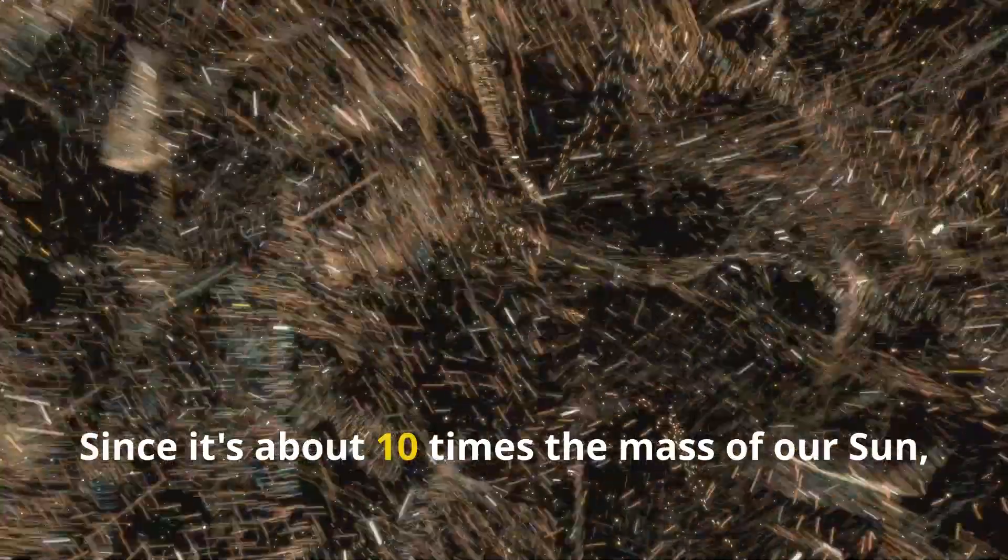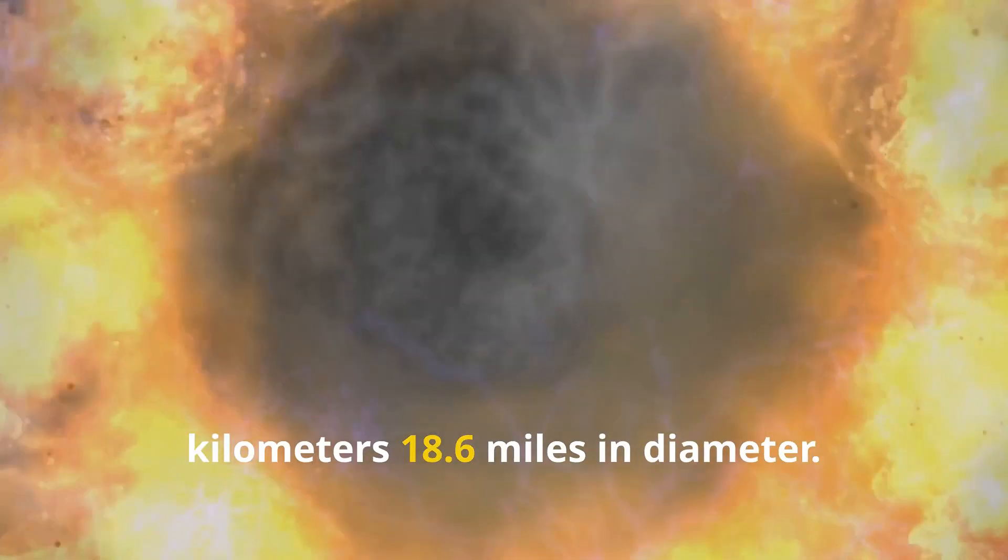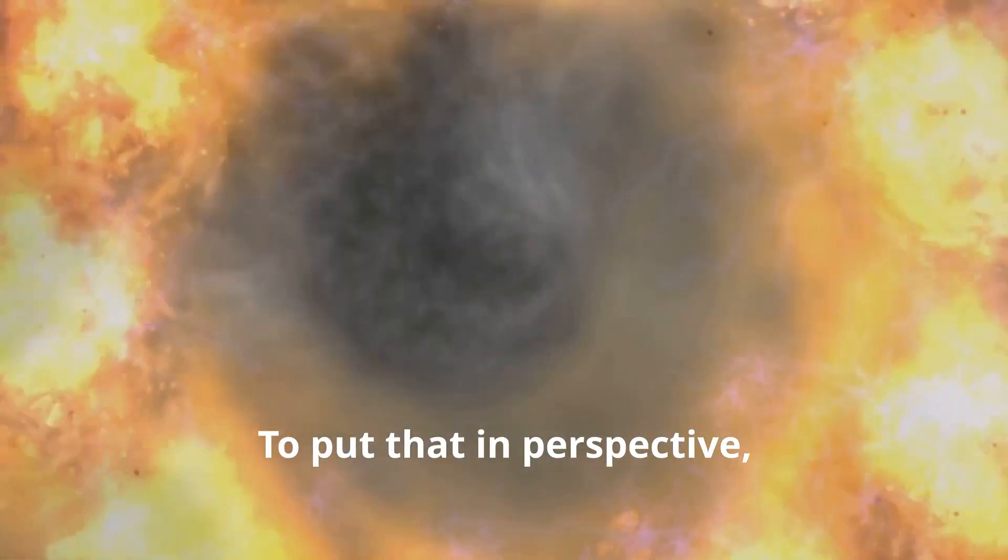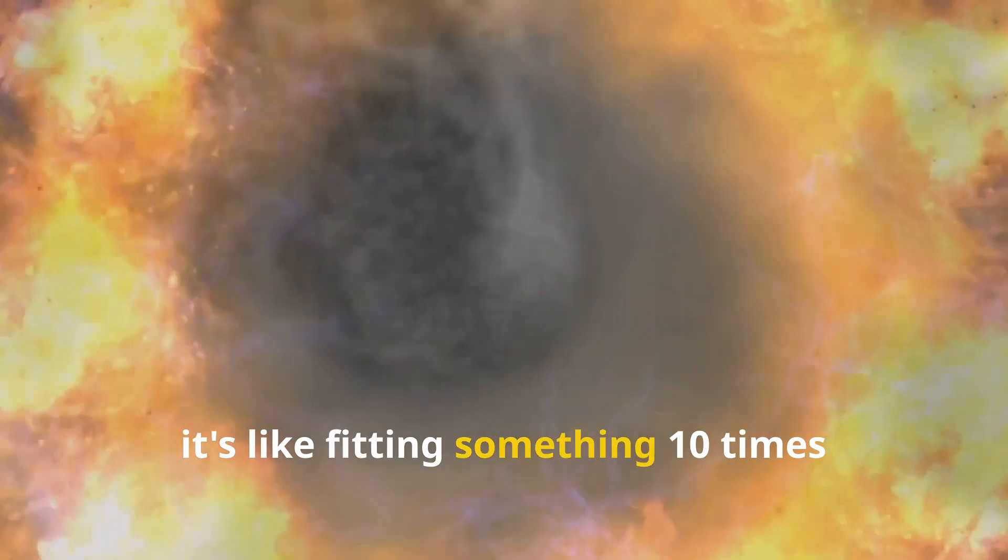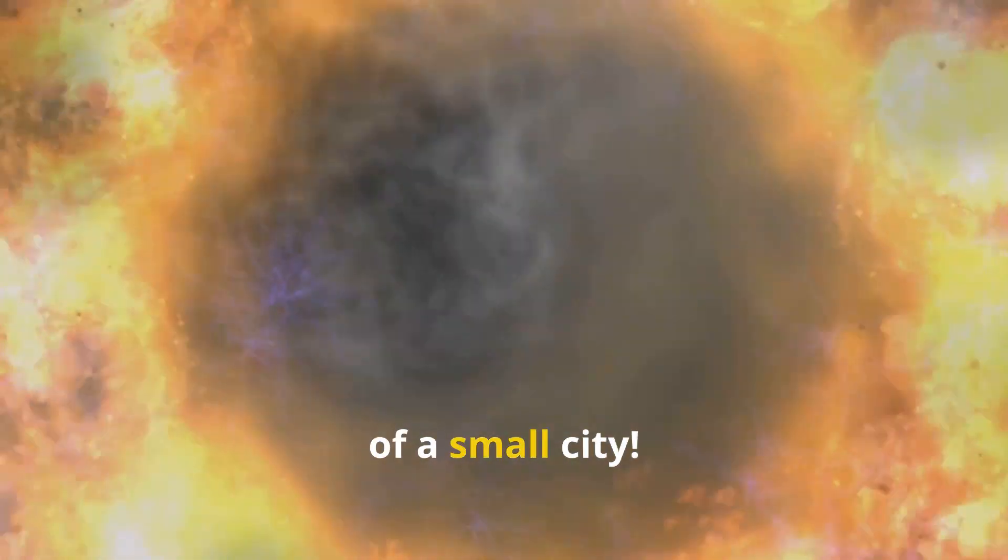Since it's about 10 times the mass of our Sun, its event horizon is roughly 30 kilometers, 18.6 miles in diameter. To put that in perspective, it's like fitting something 10 times heavier than our Sun into a space the size of a small city.